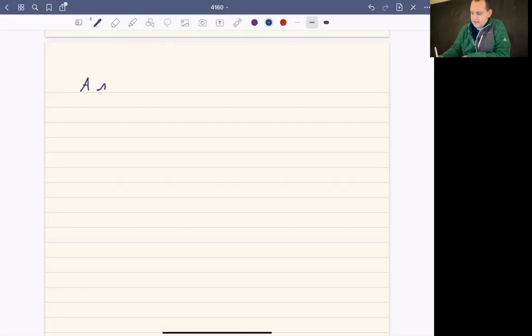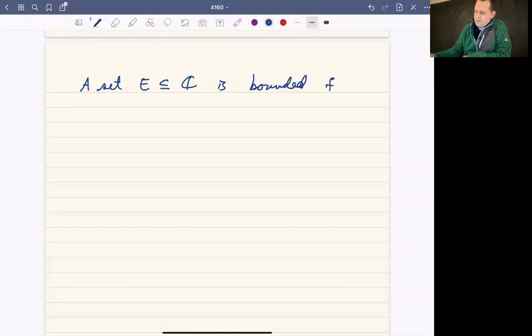So we say that a set E in the complex plane is bounded if E is contained in some disk of radius R. So if E is contained in some disk of radius R for some complex number A and for some non-negative real value R.